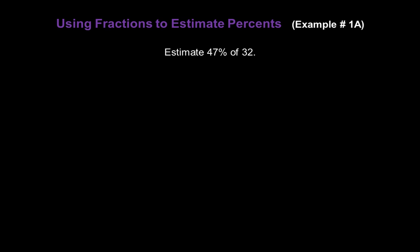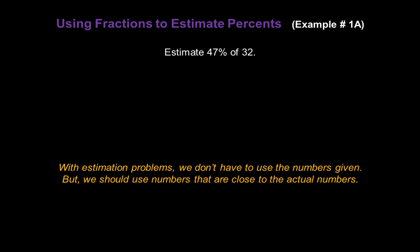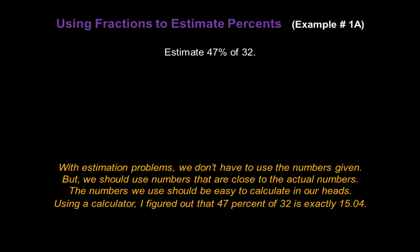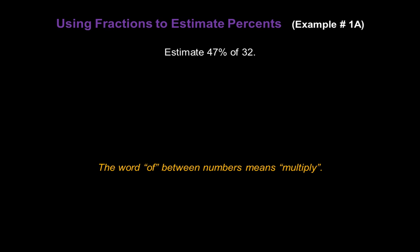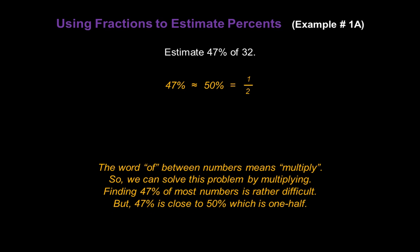Now let's take a look at some examples. Let's estimate 47% of 32. With estimation problems, we don't have to use the numbers given, but we should use numbers that are close to the actual numbers — numbers we can easily calculate in our heads. Using a calculator, 47% of 32 is exactly 15.04, so our estimate should be very close to that. The word 'of' between numbers means multiply. Finding 47% of most numbers is rather difficult, but 47% is close to 50%, which we know is one half, and finding half of a number is pretty easy.